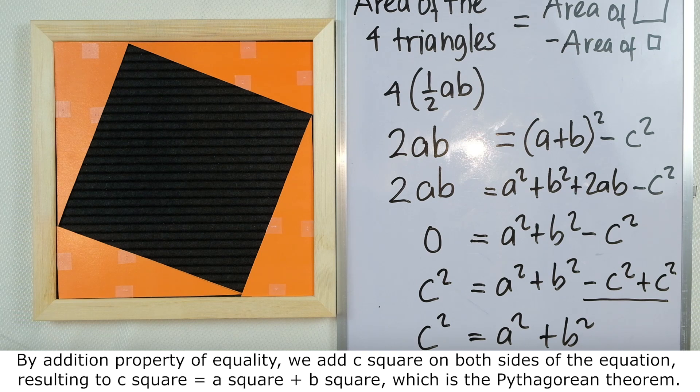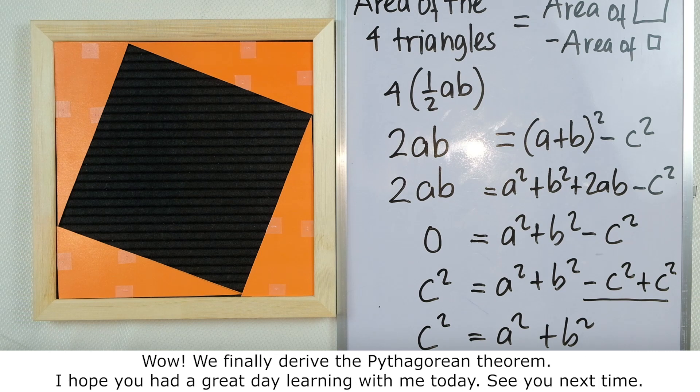So again, our Pythagorean theorem is c² = a² + b². We have finally derived the Pythagorean theorem.